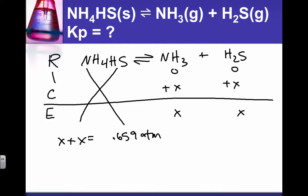Do you see where we're headed now? When we add X plus X, that means 2X is equal to 0.659 atmospheres and it's just simple algebra that allows us to solve for the value of X. We divide both sides by 2.